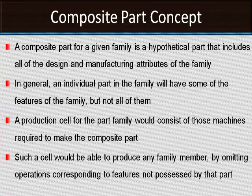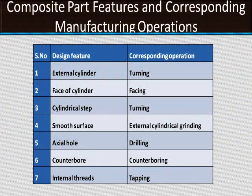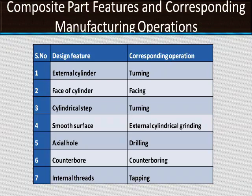We can easily design a production cell by using the composite part. If the composite part can be manufactured on a set of facilities, then that set of facilities can manufacture all parts of the family. Such a cell would produce any family member by omitting operations corresponding to features not possessed by that member. Composite part features and corresponding manufacturing operations include: external cylinder — turning; facing — facing operation; cylindrical step — step turning; smooth surface — grinding; axial hole — drilling; counter boring — counter boring; internal threads — tapping.